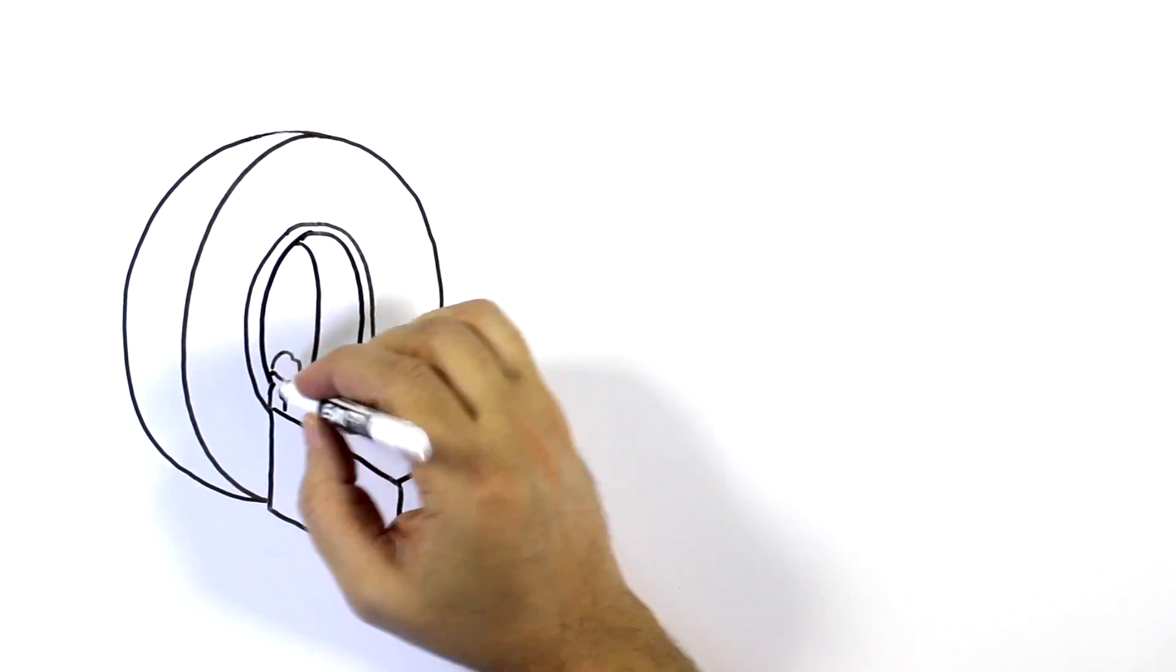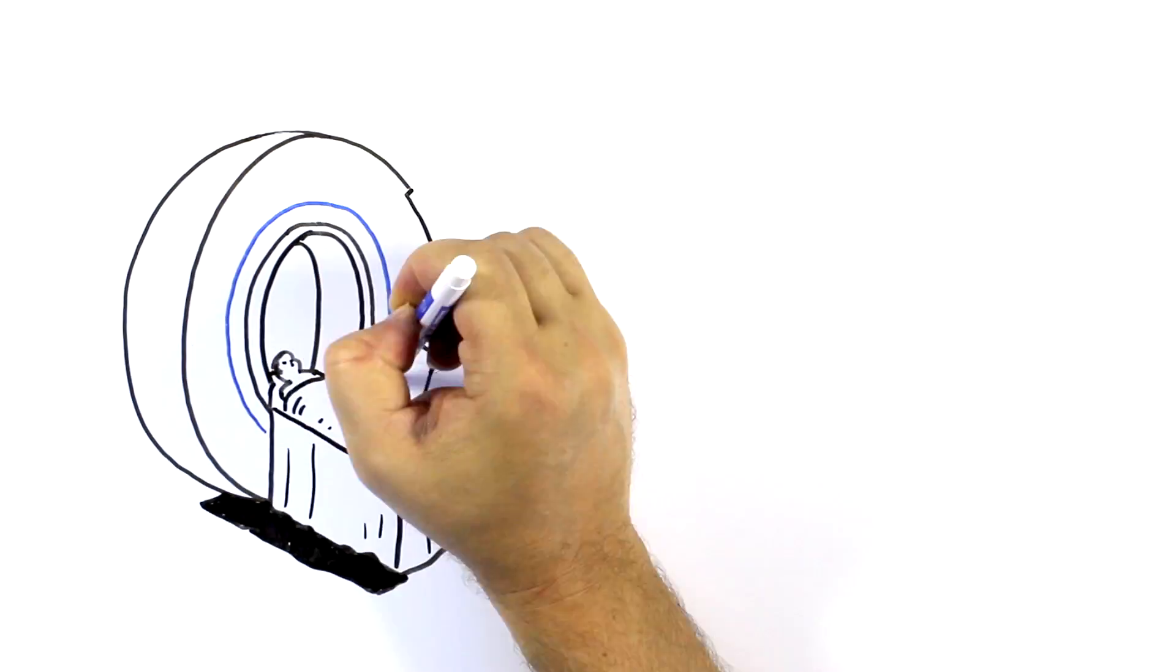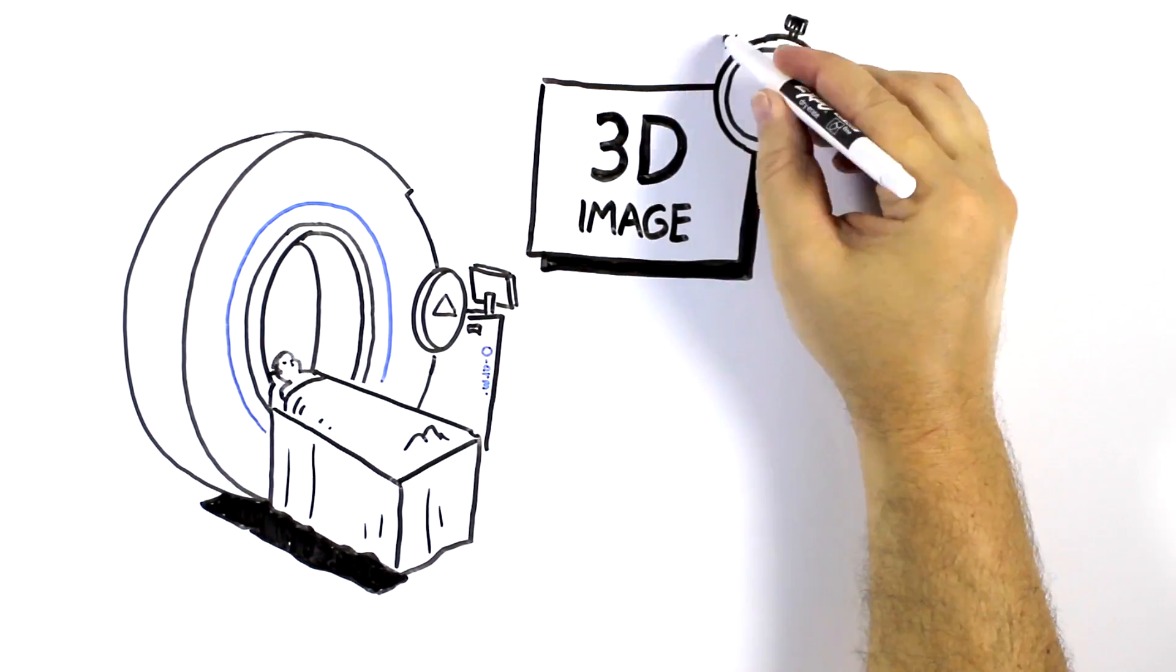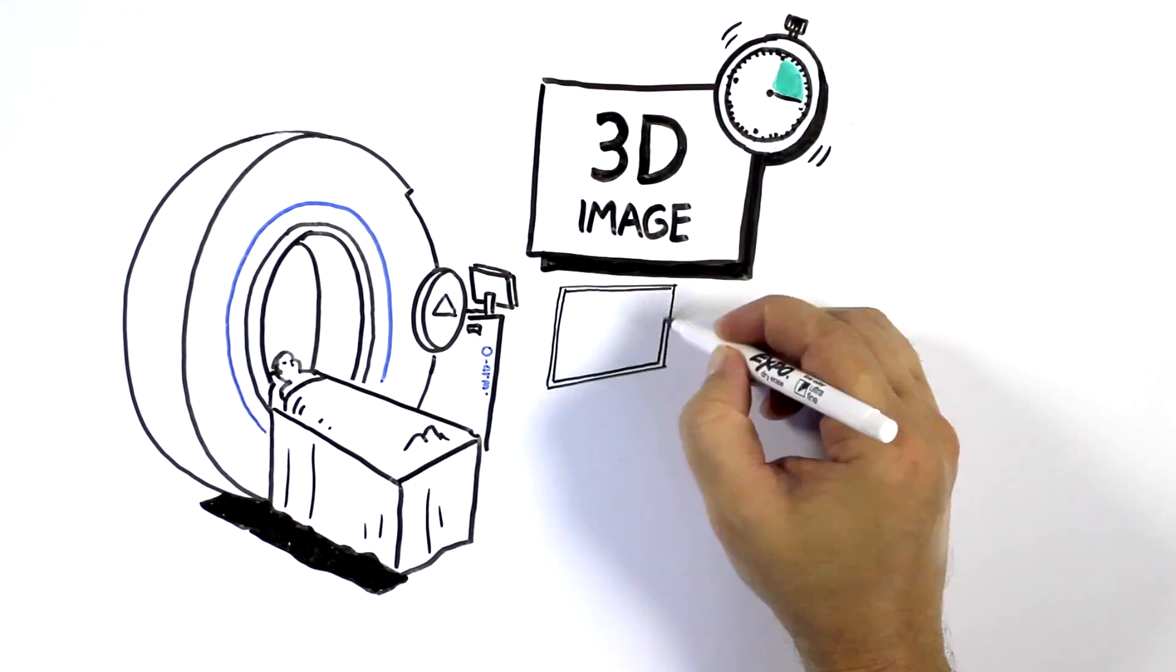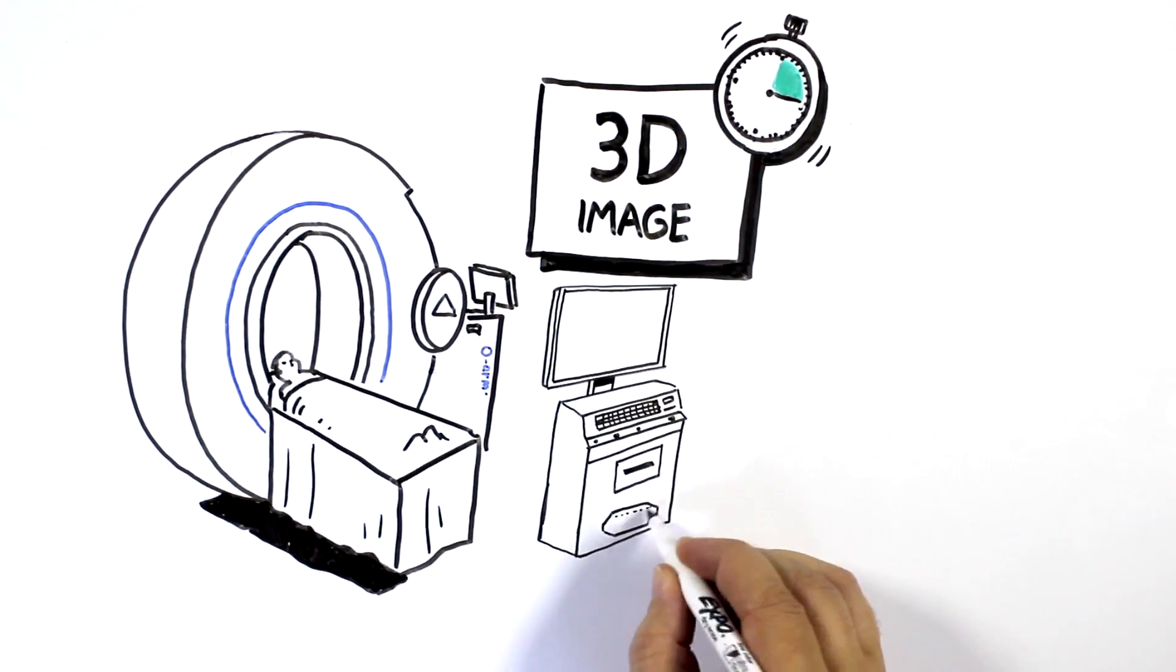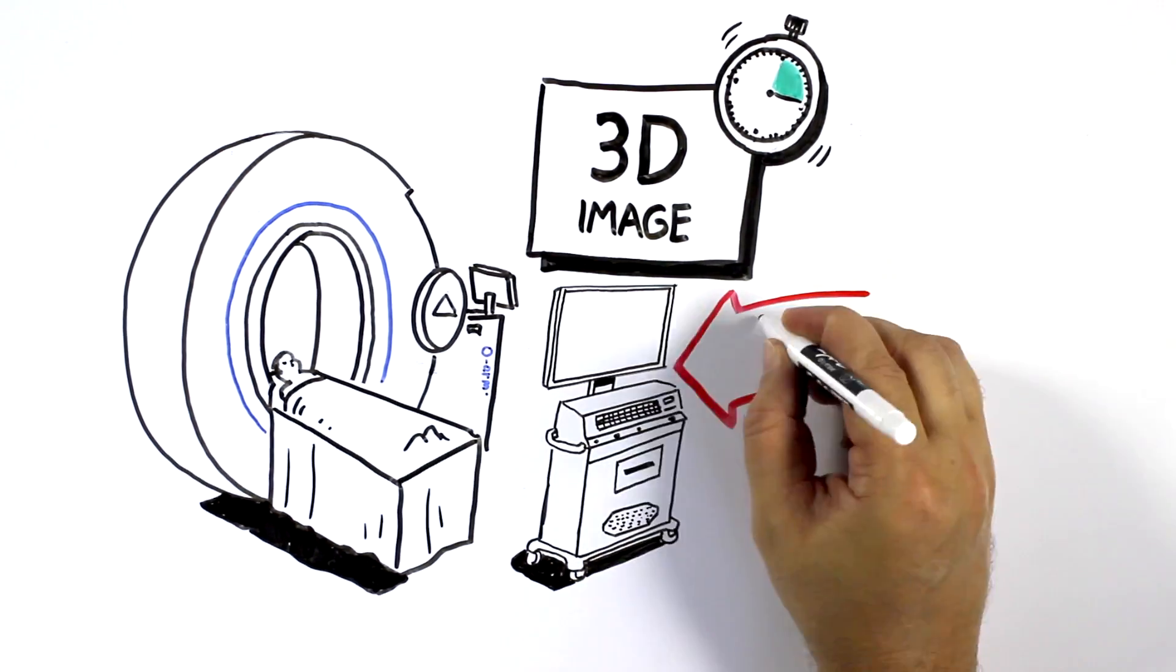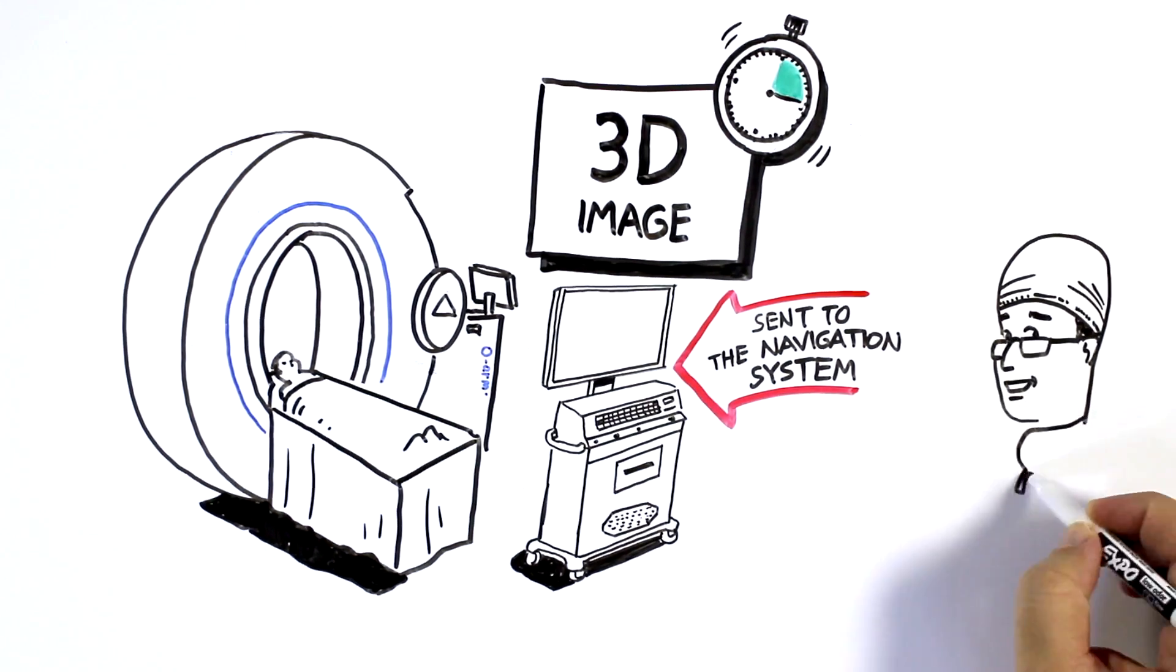Here's how it works. In a typical surgery, the O-ARM captures a 3D image from the patient in 13 seconds. Next, the images are reconstructed and sent to the surgeon's navigation system in about a minute. Now, you're up and ready to navigate.